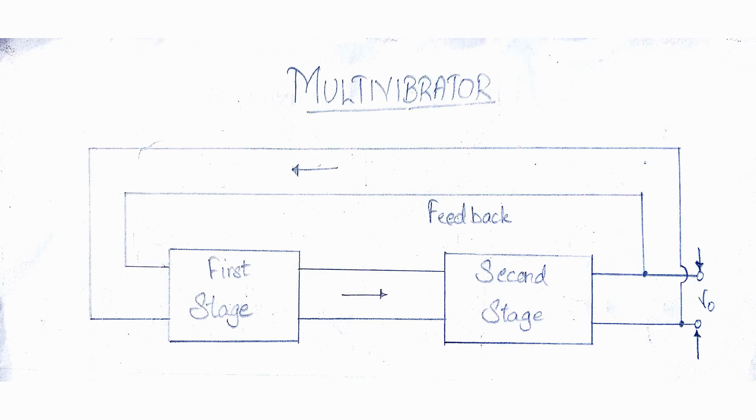Two transistors are connected in feedback so that one controls the state of the other. Hence, the ON and OFF state of the whole circuit and the time period for which the transistors are driven into saturation or cutoff are controlled by the condition of the circuit. The following figure shows the block diagram of a multivibrator.